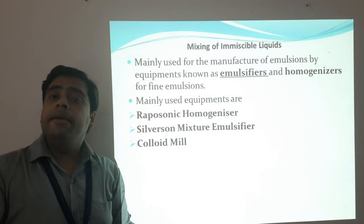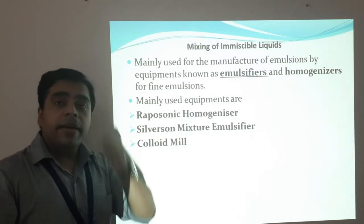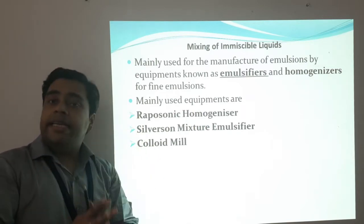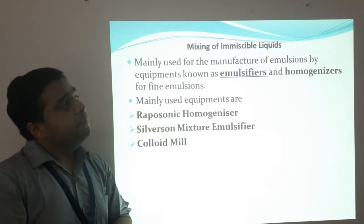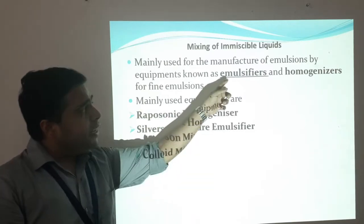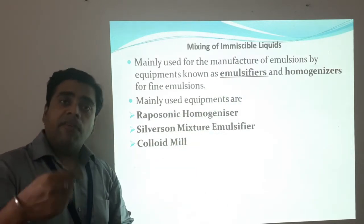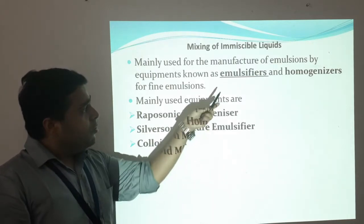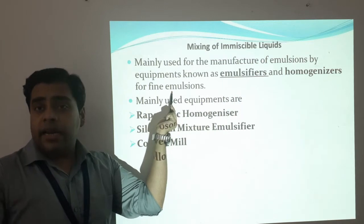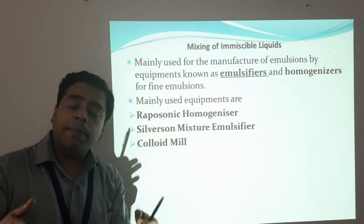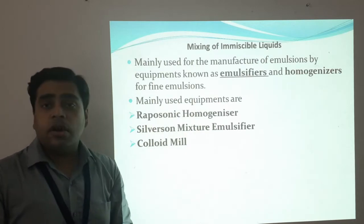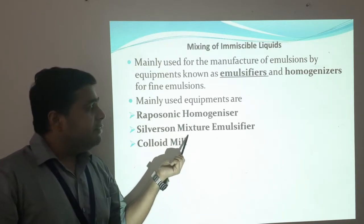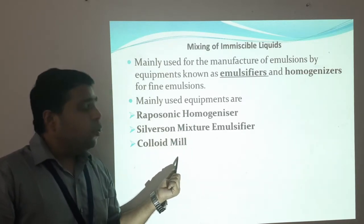Now let us come to the mixing of immiscible liquids — another important phenomenon, particularly for biphasic systems like emulsions. These are mainly used for the manufacture of emulsions by equipments known as emulsifiers, and to further decrease the particle size or globule size of oil-water systems, we use homogenizers for finer emulsions. The basic equipments used are: the rapisonic homogenizer, the Silverson mixer emulsifier, and the colloid mill.